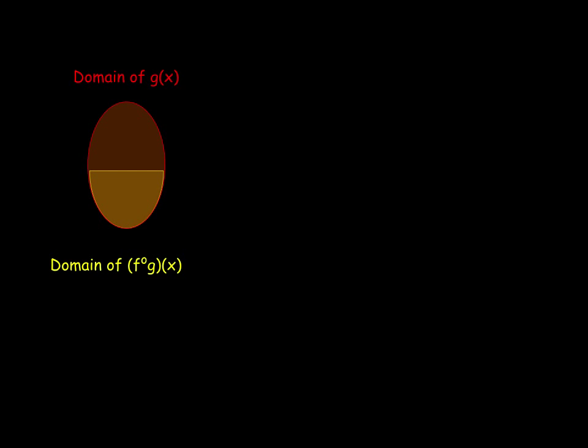We start with the domain of G because this is the function first input when forming the composition. G is inside, so its domain is the beginning domain. If we follow the composition, we start with an element that is in both the domain of G and the domain of the composition.